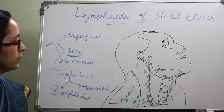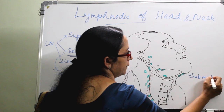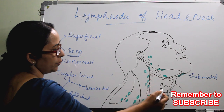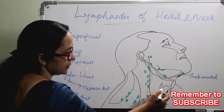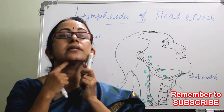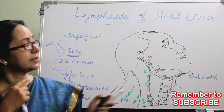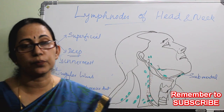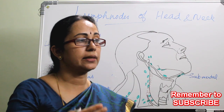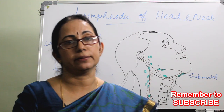The first group is the submental group. The submental nodes are located in the submental triangle, between the two anterior bellies of the digastric muscle, below the chin in the anterior triangle. The drainage area of the submental group is the anterior floor of mouth and also the midline area from the gums and the lower teeth.